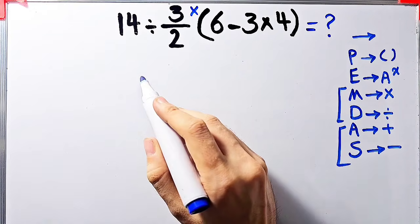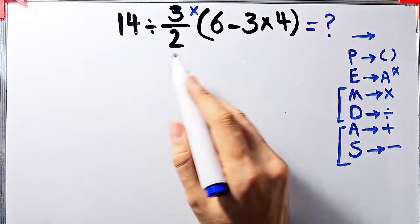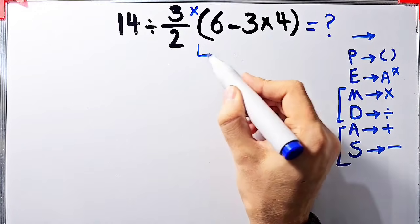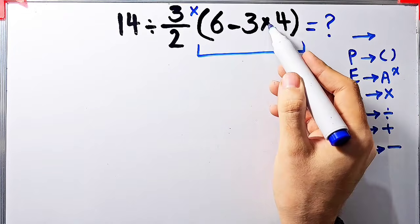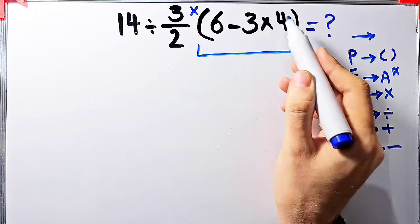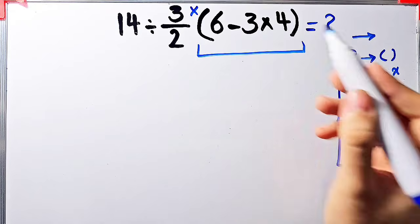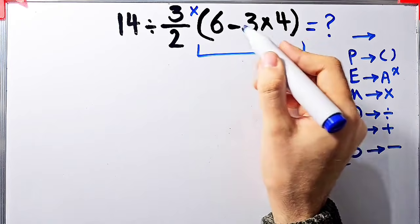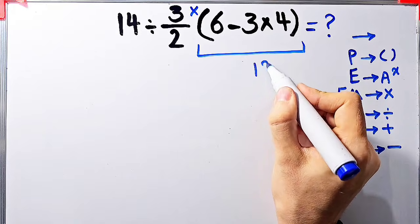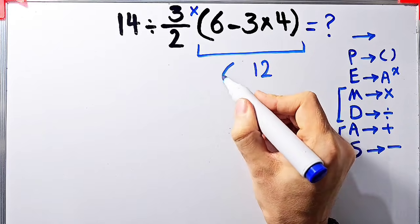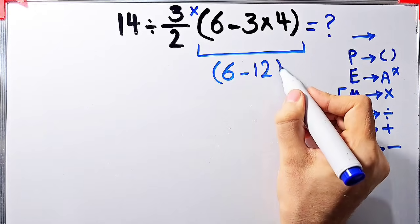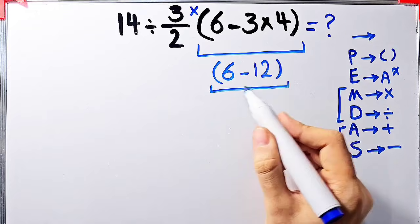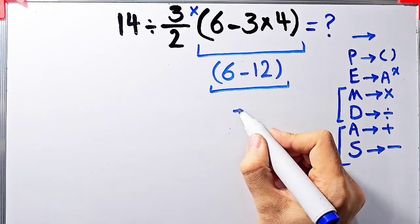According to the PEMDAS rule, in this question, first we simplify the parentheses. Inside these parentheses, we have subtraction and multiplication. First, we do this multiplication because multiplication has higher priority than subtraction. Negative 3 times 4 equals negative 12. Now we have 6 minus 12 inside these parentheses, and 6 minus 12 equals negative 6.